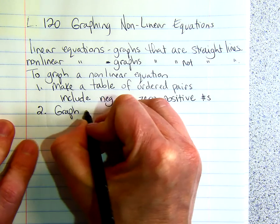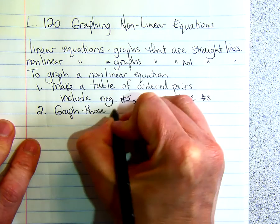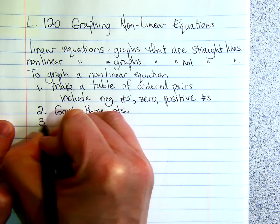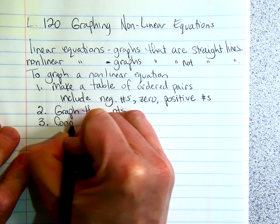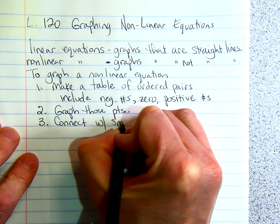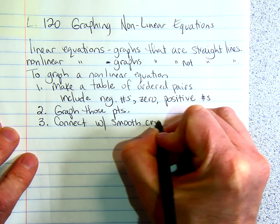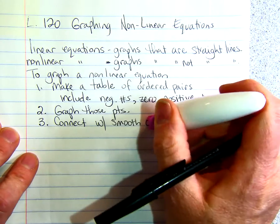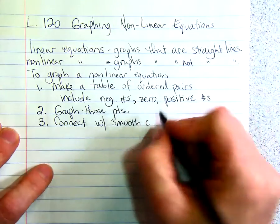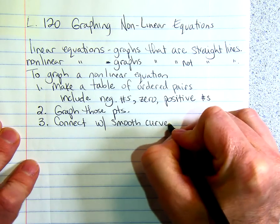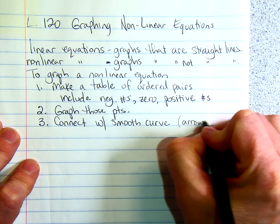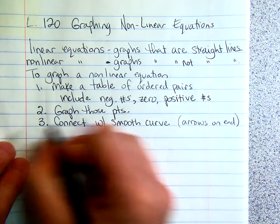Two, you're going to graph all the points that you found, the x-y pairs. And then three, you're going to connect with a smooth curve. And you're going to remember to put arrows on the end of your curve. That just shows that it will continue on.